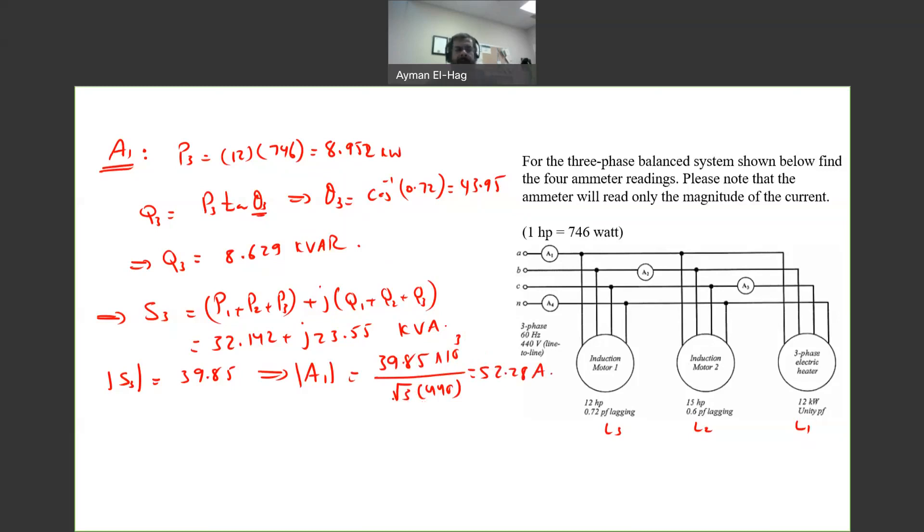So we found a1, a2, and a3. How about a4? A4 is the current in the neutral, and in a balanced system the neutral current has to be equal to zero. I don't need to do any calculations; this current has to be equal to zero.